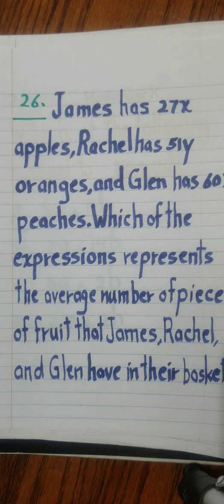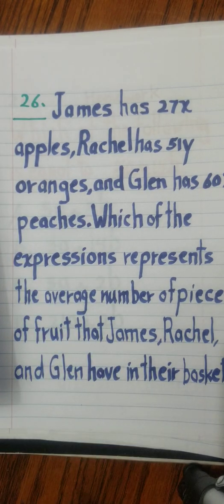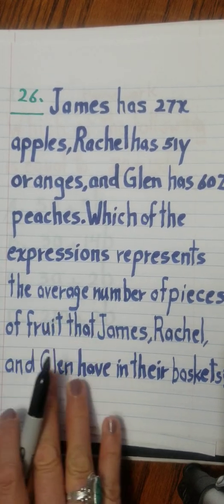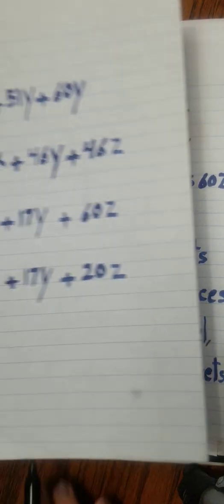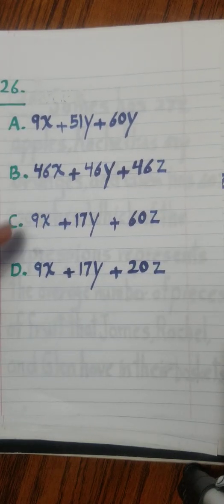And question 26. So you're going to read it. And I think it's clear. And you have four options. A, B, C, D. Pick one of them.